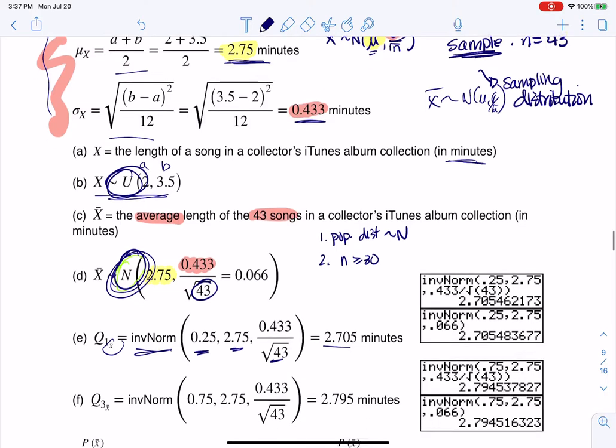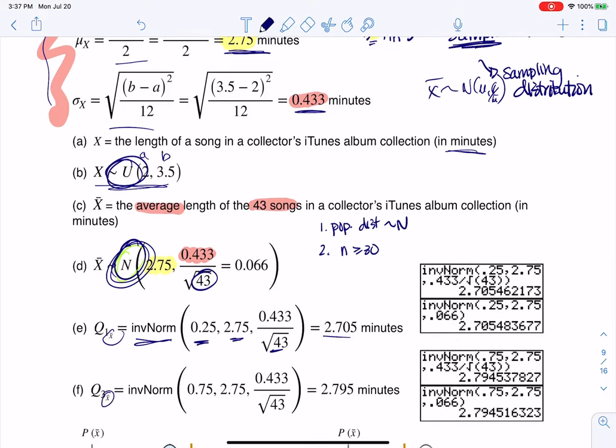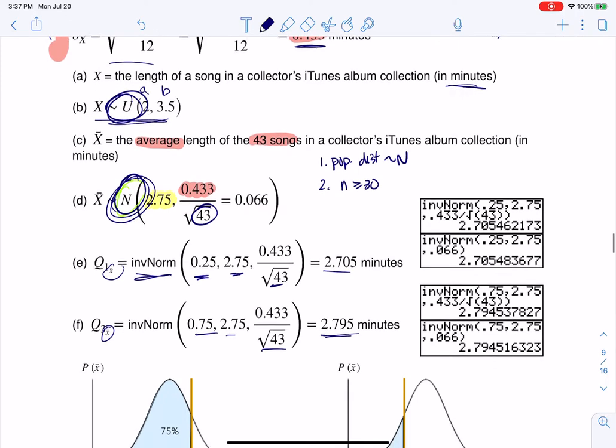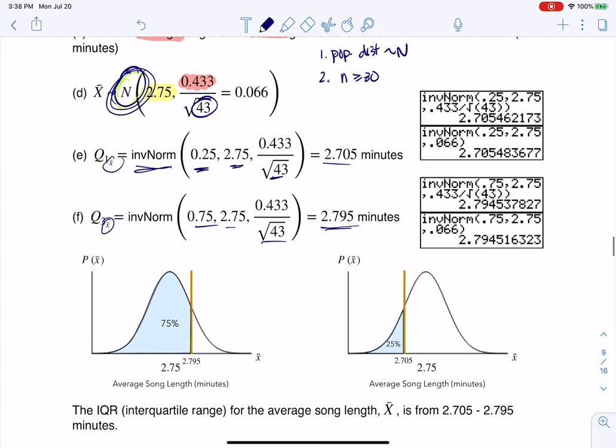If I want the third quartile, and again, the third quartile from the sampling distribution, this means plug in the 75th percentile, mean, standard error, and get your number. Then you would just subtract those two if you wanted to actually find the IQR.